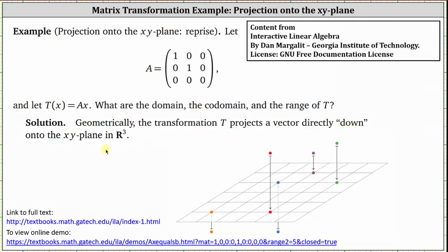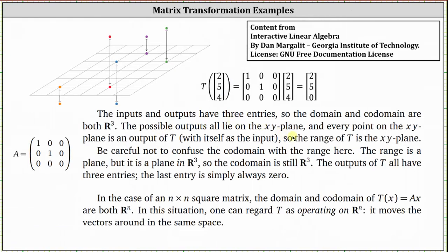We'll take a look at an animation of this in just a moment. The inputs and outputs have three entries. So the domain and co-domain are both R3. The possible outputs all lie in the xy plane and every point on the xy plane is an output of t. So the range of t is the xy plane.